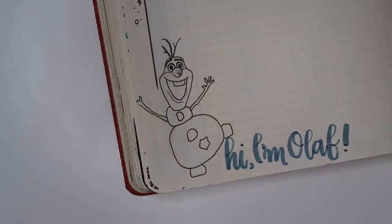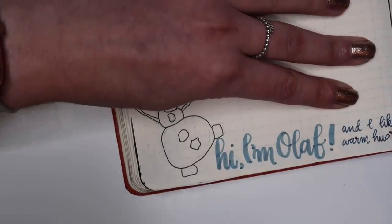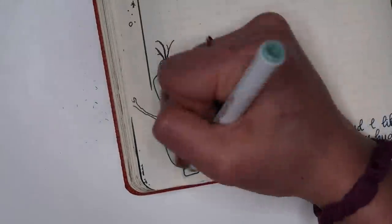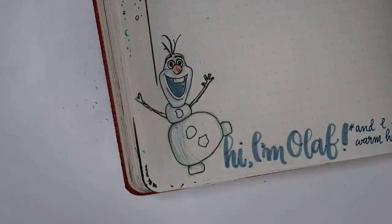And I wrote the iconic quote, hi I'm Olaf and I like warm hugs. So he's just very cute. He very much ties together the frozen theme of this month's bullet journal spread.